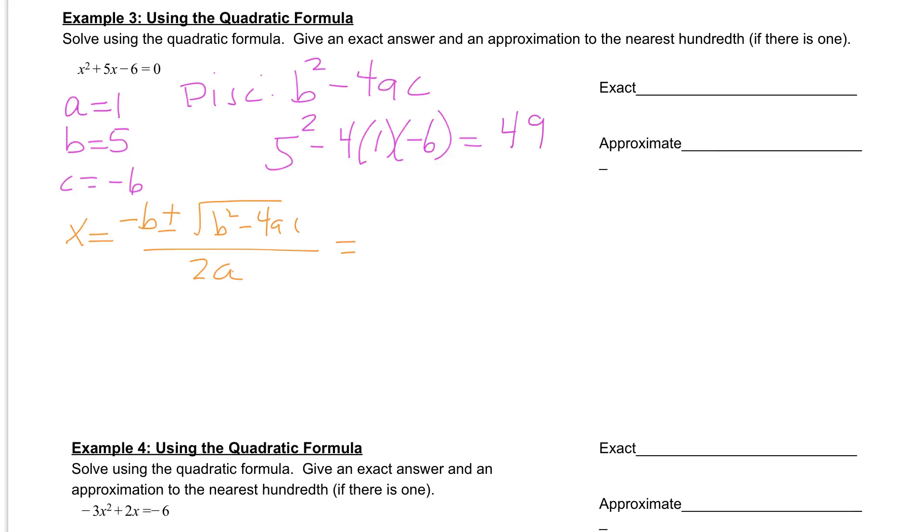So when we plug this in, first thing we're looking at is the opposite of b. Since b is a positive number, the opposite of a positive would be a negative. So we have negative 5 plus or minus the square root. Now, remember, the square root is b squared minus 4ac. That's the number that goes underneath. That's our discriminant. So this number we found here is going to go underneath here. So that 49 is what's underneath there. And we're dividing all of this by 2 times our a value, which is 1.